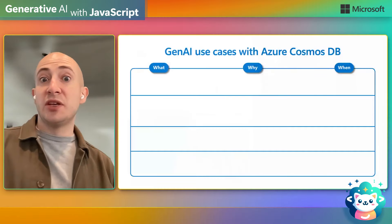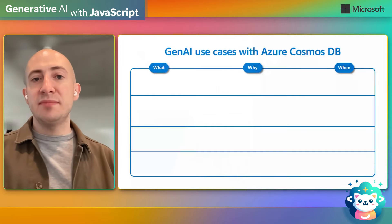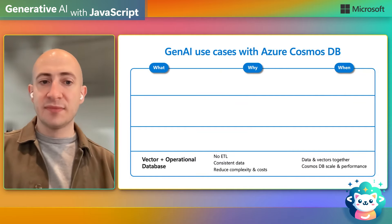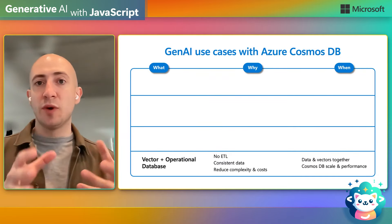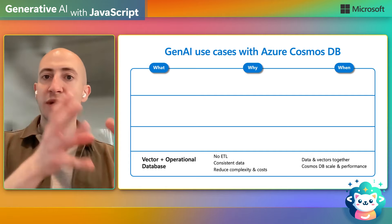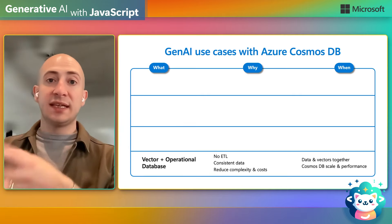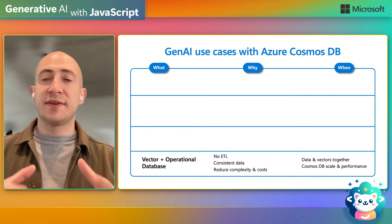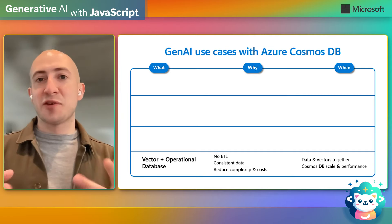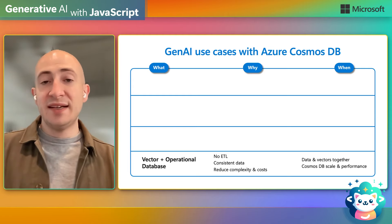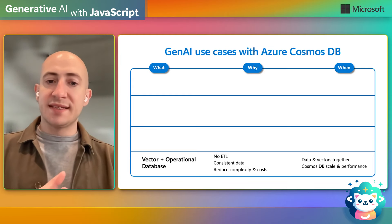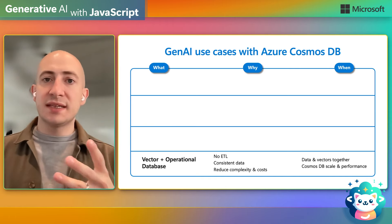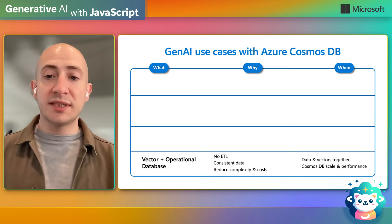Let's look at some specific use cases customers have built on Cosmos DB. The first is a vector and operational database in one. You don't need to store your data in one database and have a dedicated vector database for vector search — you can store everything together in Azure Cosmos DB for NoSQL. A vector is just a list of numbers, and those numbers can be stored as another property in your document in Cosmos DB. This means you don't need to ETL data to another resource, you can maintain data consistency, and it reduces the complexity and cost of your AI application architecture.